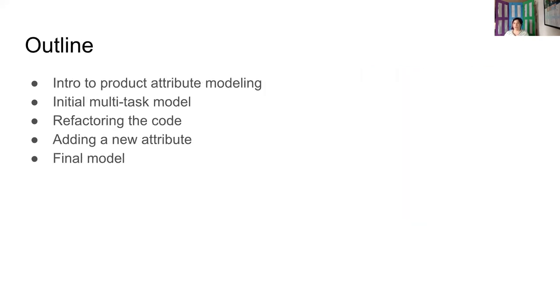Just a little bit of an outline of what we'll be talking about. So first, we'll introduce you to the problem we are trying to solve, which was product attribute modeling. We'll discuss our initial multitask model. Then we'll jump to the refactoring the code section, which is obviously my section, since I love refactoring. We'll talk about what happened when we tried to add a new attribute, as well as discuss our final model. And throughout the presentation, we'll sprinkle in some lessons that we learned while collaborating with one another.